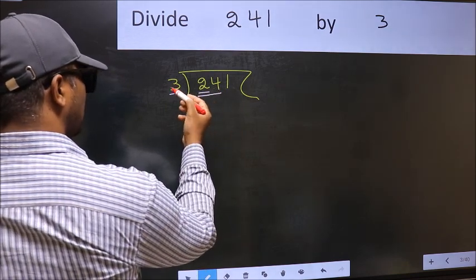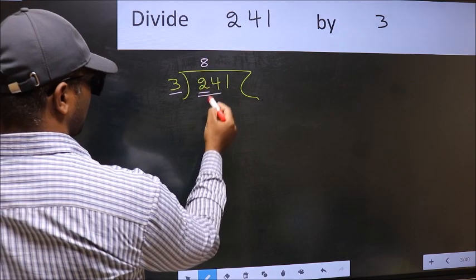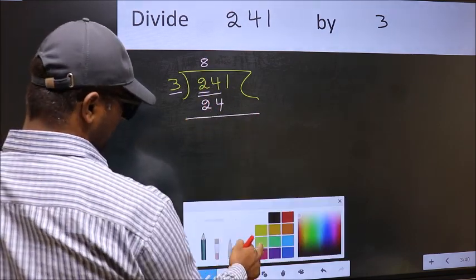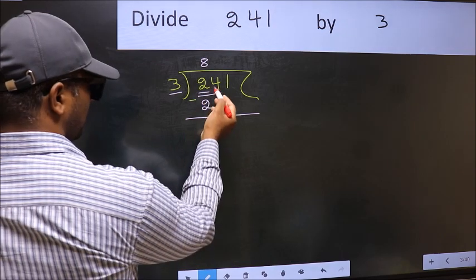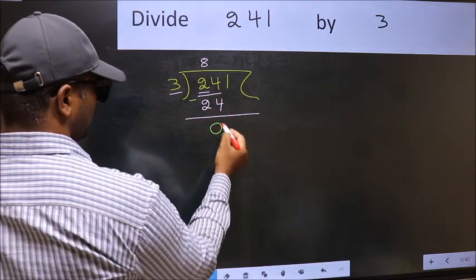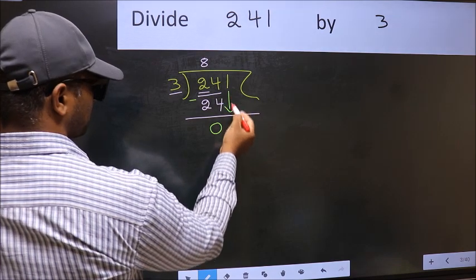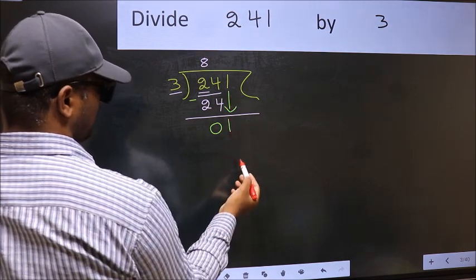When do we get 24 in 3 table? 3 eights, 24. Now, we should subtract 24 minus 24, 0. After this, bring down the beside number. So, 1 down.